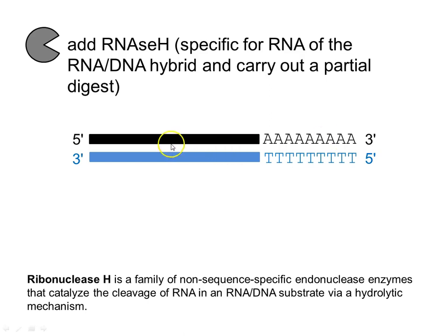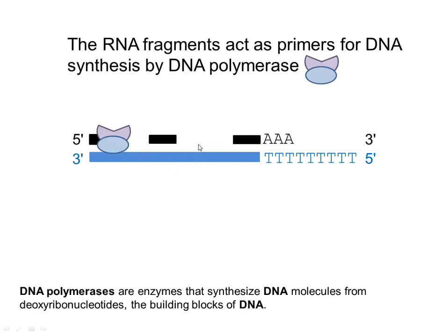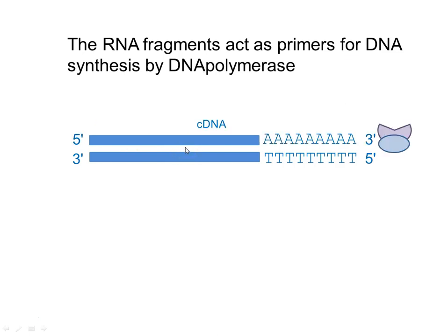We now need to remove the initial RNA that we started with. To do that, we use RNase H, which is specific for the RNA in a DNA-RNA hybrid. It carries out a partial digest and chops up the RNA, leaving little fragments that we use as primers for DNA polymerase. DNA polymerase takes those primers bound to our DNA strand and uses base pairing to copy in the missing strand. In this way, we end up with double-stranded DNA — this is our cDNA, a copy of the messenger RNA that we started with.